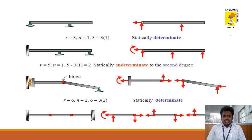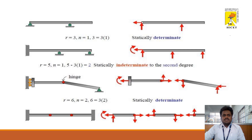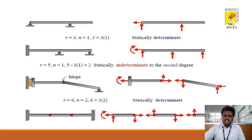Let us look at examples. In the first example, the support conditions are hinged and roller supported. A hinged support provides two reactions: one vertical and one horizontal. A roller support provides only one reaction. Using the formula r = 3n, we get r = 3 and n = 1, so 3 equals 3 into 1. This is a statically determinate structure.